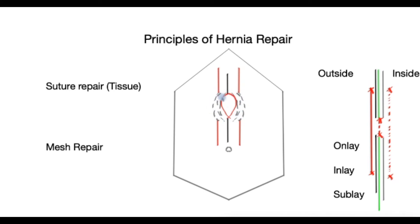Once the hernia sac has been cleared and pushed back, we are left with a defect — the original place through which the hernia came through. There are two main ways of repairing that defect: suture repair and mesh repair.